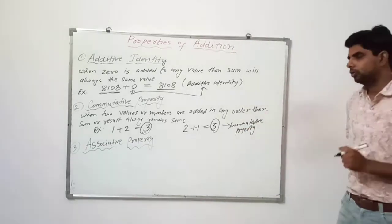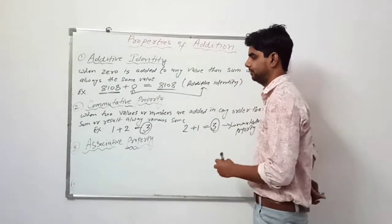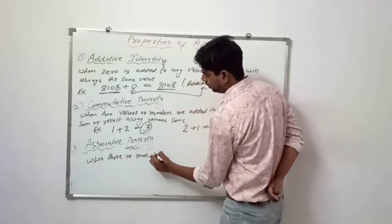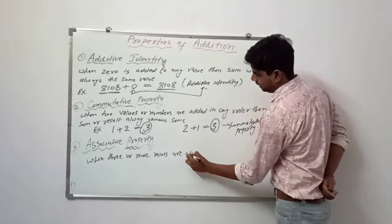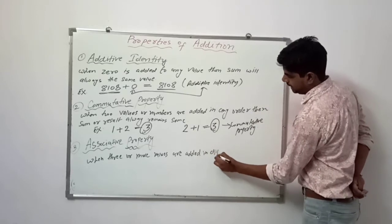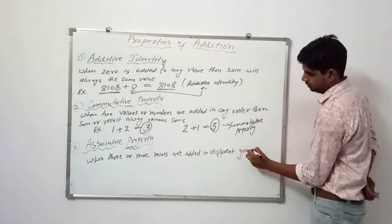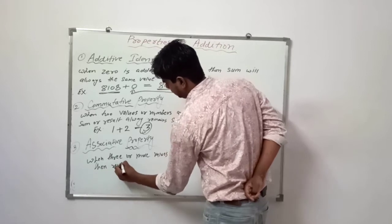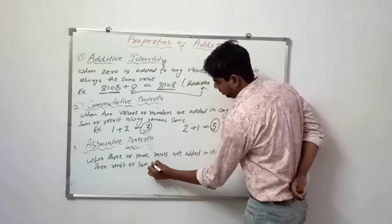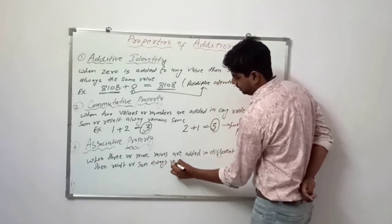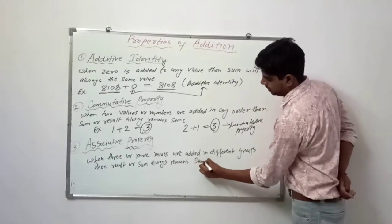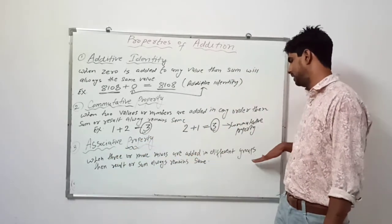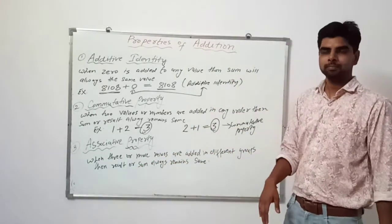Now the third property: the Associative Property. What it says is, when three or more values are added in different groups, the result or sum always remains the same.